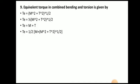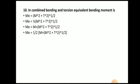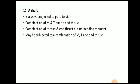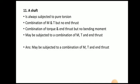Next question: equivalent torque in combined bending and torsion — this is very important for numericals. The equivalent twisting moment is given by the square root of (M² + T²). The equivalent bending moment, represented by Me, is equal to half of [M + √(M² + T²)].